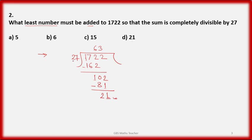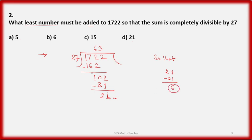Since the remainder is 21, to make 1722 divisible by 27, we need to add enough to complete 27. So we add 27 minus 21, which gives 6. That is the correct option.